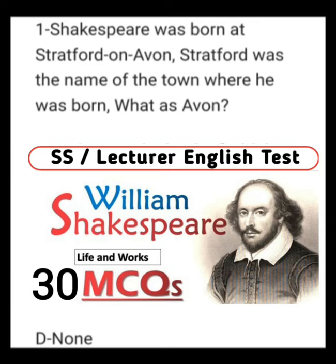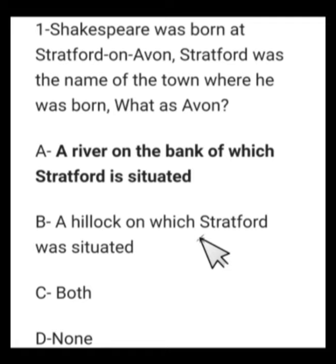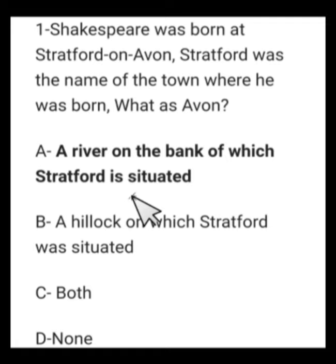Number 1: Shakespeare was born at Stratford-on-Avon. What was Avon? The options are: a river on the bank of which Stratford is situated, a hillock on which Stratford was situated, both A and B, or none of these. The right option is A — Avon is a river on the bank of which Stratford is situated.